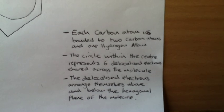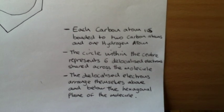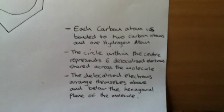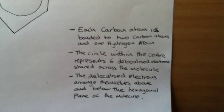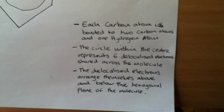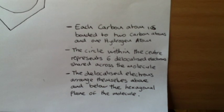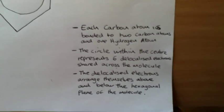The key thing is to remember that the six delocalised electrons come from the carbon atoms. These are the key points which you have to remember about benzene. You also need to know that the delocalised electrons arrange themselves above and below the hexagonal plane of the molecule. I will show you a diagram in a minute to help you understand that.